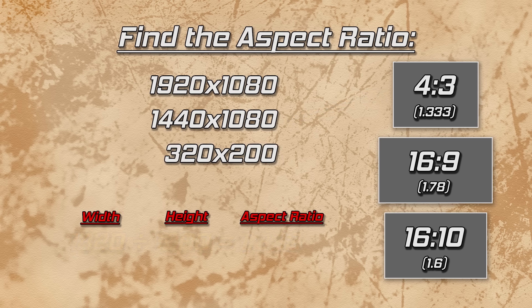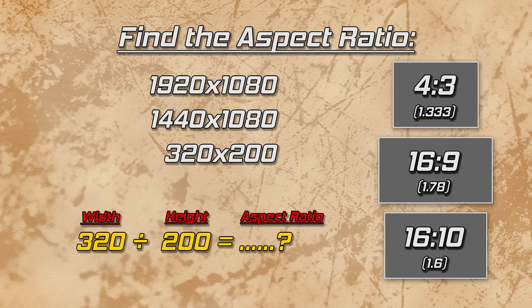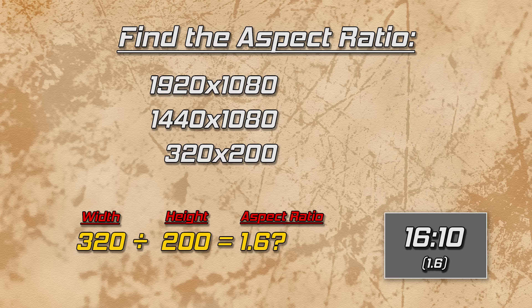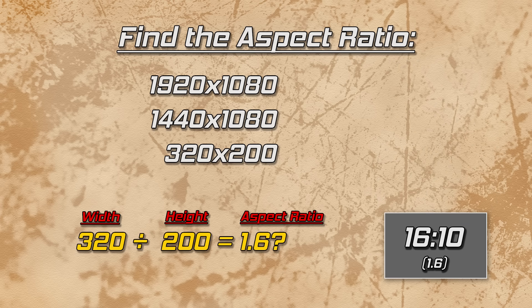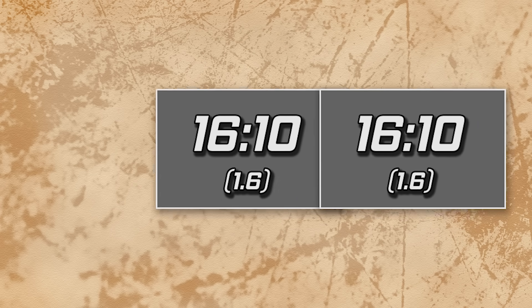But what about that 320x200 resolution — one of the most common resolutions used in DOS gaming? Dividing the width of 320 by the height of 200 gives you 1.6. Not the decimal you were expecting. Instead, you get a widescreen aspect ratio. Something is wrong.